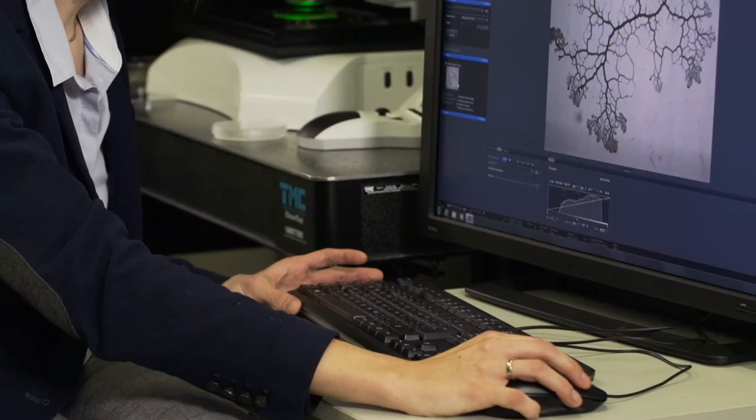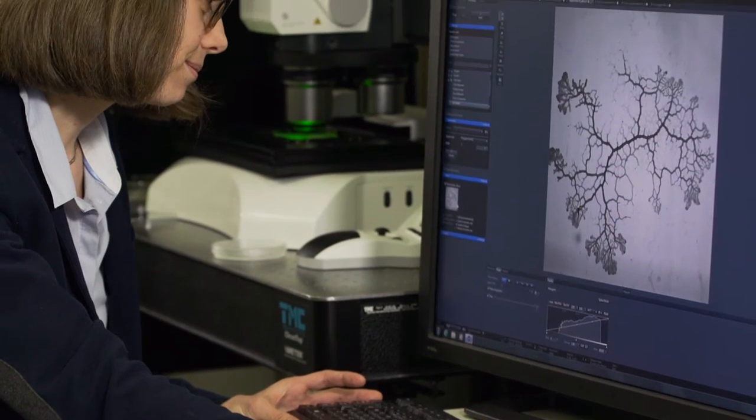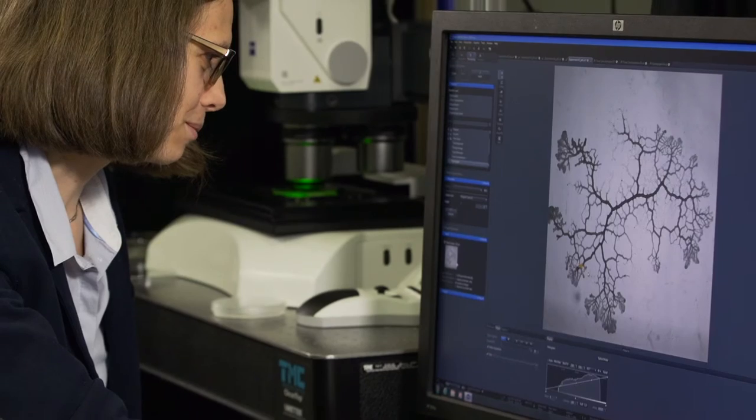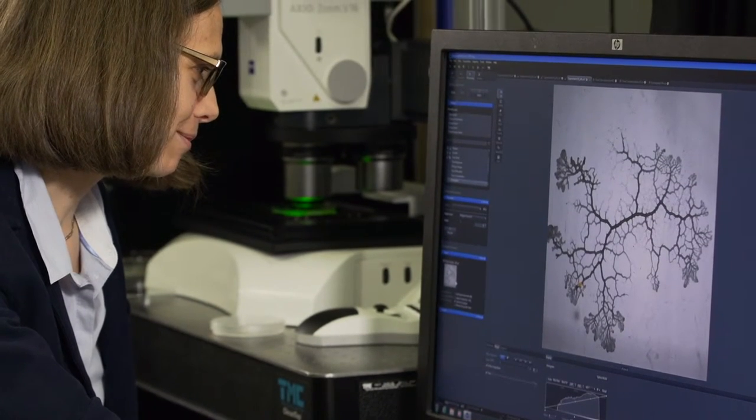I'm using the slime mold Physarum polycephalum as a model system, because this organism is stripped naked to just the vascular network. Physarum is easy to observe, to quantify, to theoretically model, and therefore it's perfect to study how the network adapts to stimuli. How is information propagated? How is it processed? How is it memorized in the network architecture?